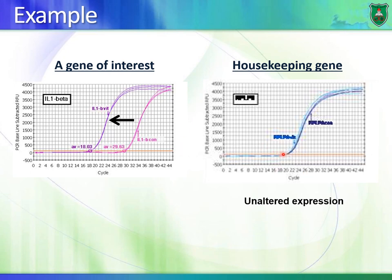By doing real-time PCR of a housekeeping gene — in this case a ribosomal protein, whose expression should not change according to condition — and noticing for two samples here, dark blue and light blue, that the detection is similar, this is real-time PCR of messenger RNA or cDNA confirming equal starting material.